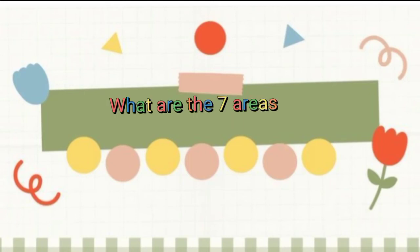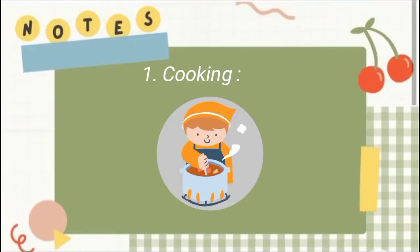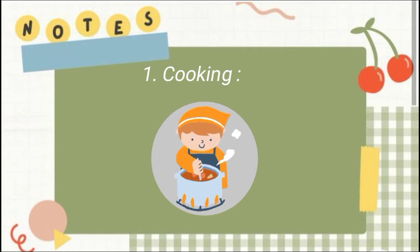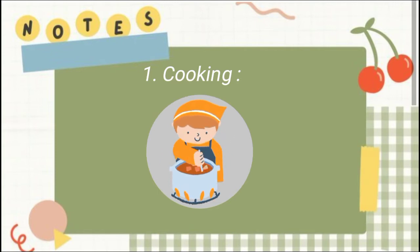What are the seven areas of home economics? Number one: cooking. Learning how to prepare balanced, nutritious meals for themselves and others is a big step in encouraging students to be independent and take control of their health.